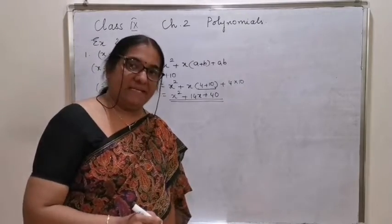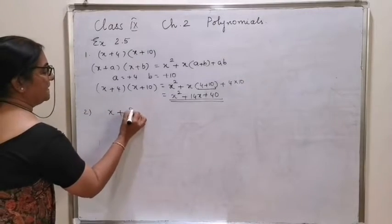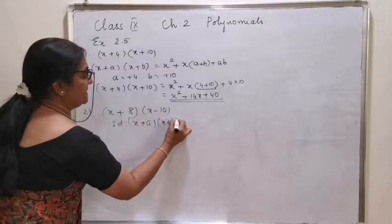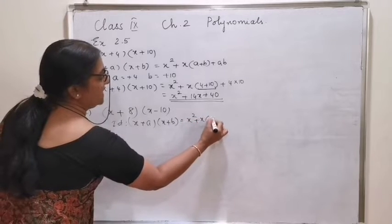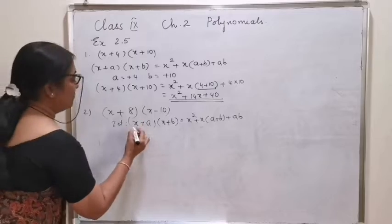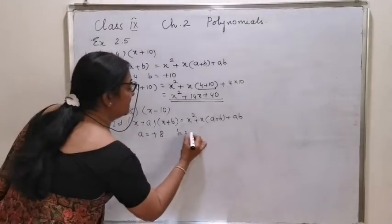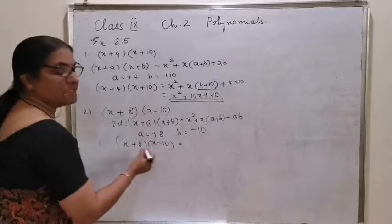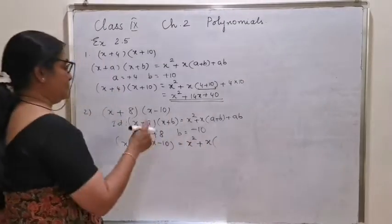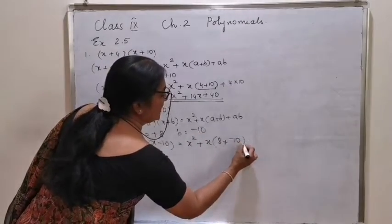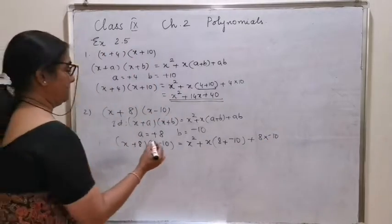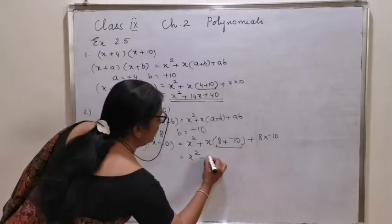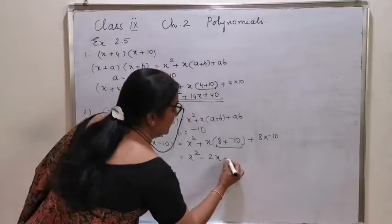The second one: x plus 8 into x minus 10. Identity: x plus a into x plus b is equal to x square plus x into a plus b plus ab. Your a value is positive 8 and b value is minus 10. Substituting: x plus 8 into x minus 10 is the same as x square plus x into 8 plus minus 10, plus 8 into minus 10. That gives x square, and 8 plus minus 10 is minus 2, so minus 2x, and 8 into minus 10 is minus 80.